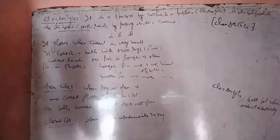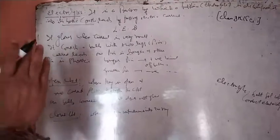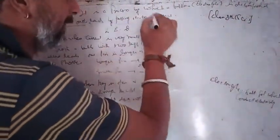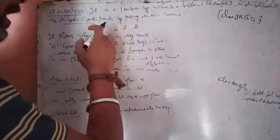When we pass an electric current through the electrolyte, then the electrolyte will turn into its constituents. That process is called electrolysis.